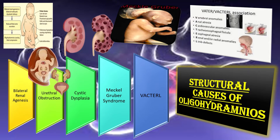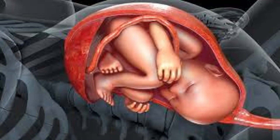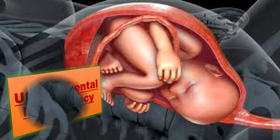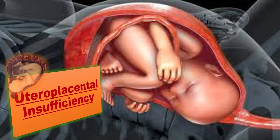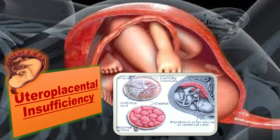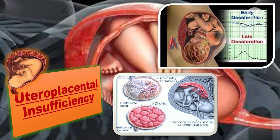Uteroplacental insufficiency can result from certain conditions such as diabetes, drug abuse, post-date pregnancy, certain cardiac conditions like high blood pressure, medical conditions that may cause blood clots, or developmental issues with the placenta. This uteroplacental insufficiency results in a decreased amount of amniotic fluid.